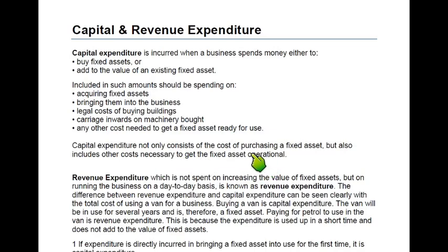Capital expenditure normally increases the value of a non-current asset, or it reduces its future running costs. For example, if I install a CNG kit in my motor vehicle, it reduces future petrol consumption — gas is cheaper than petrol fuel, so it saves money in the future. Therefore, it is also capital expenditure. Capital expenditure is not treated as an expense; it is treated as a non-current asset.